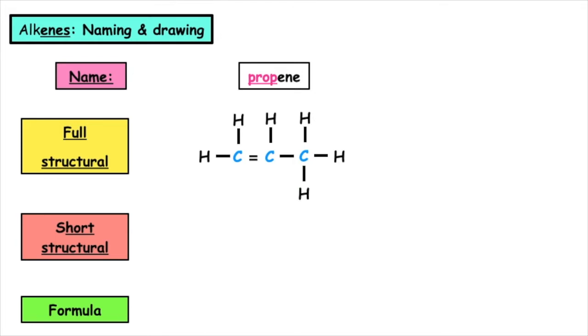We take each carbon separate. So we have CH2, a CH and a CH3 to write out the shortened structural formula. And for the molecular formula, we add up the total number of carbons and hydrogens, which is C3H6.